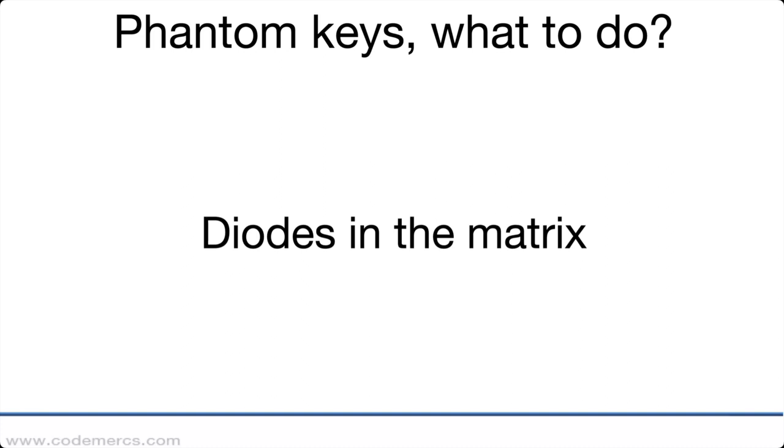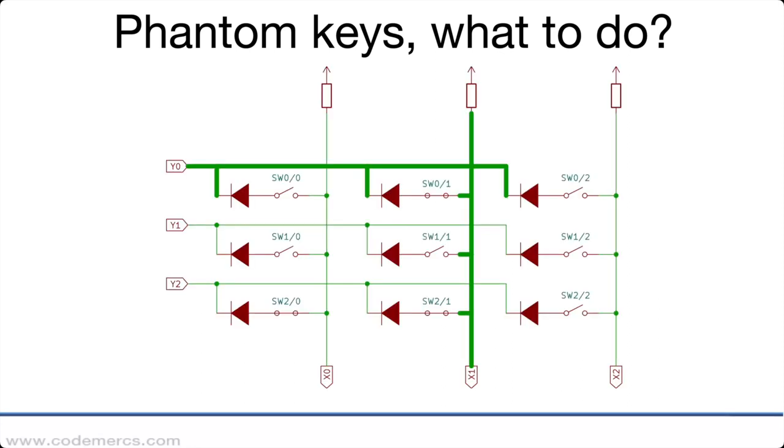So what can we do to prevent these phantom keys? The most effective method is to put a diode at each of the keys. In this example here, when the y0 line is pulled low only the x1 line gets pulled low, since the key at the coordinate x1 y2 is now blocked by the diode so it cannot pull the y2 line low.